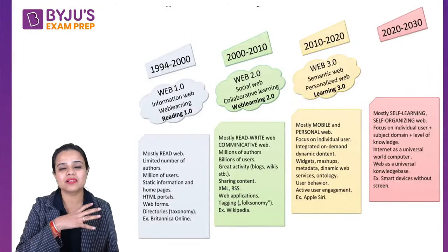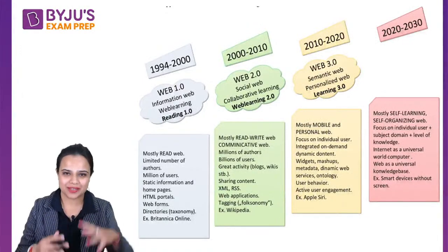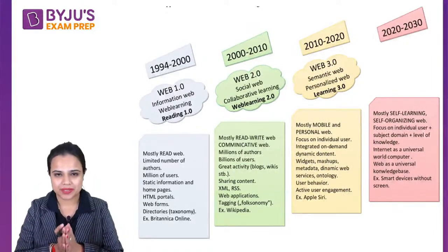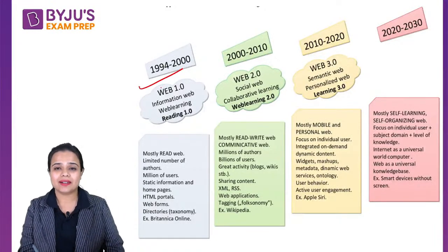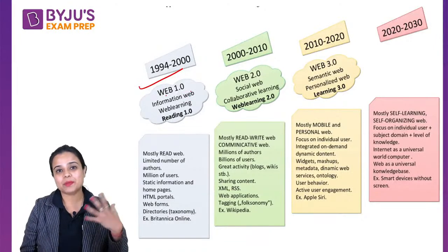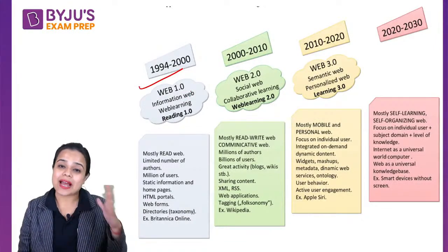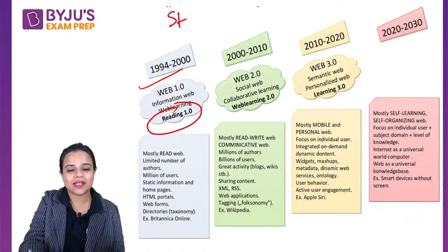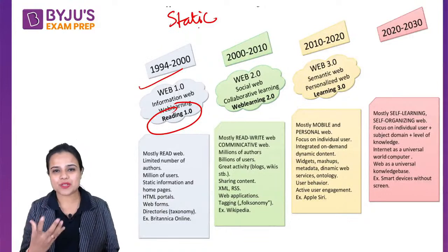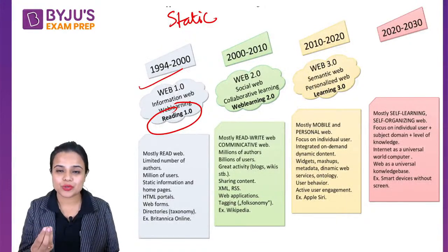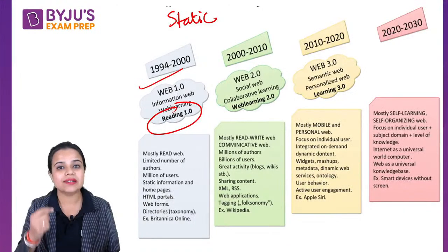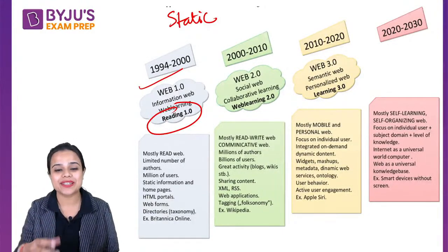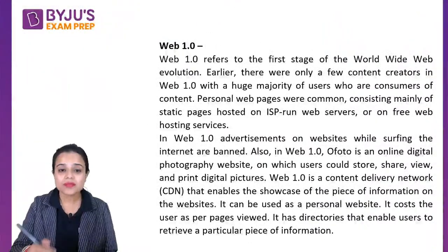First of all, this is a chronology — an evolution of the entire internet. The person credited with the discovery of the internet is Tim Berners-Lee. That was the very first internet: Web 1.0. It was more about the static part, the reading part. There were static pages, a limited number of photos, and a limited user base. It was mostly read-only content through portals and web forms — for example, Britannica.